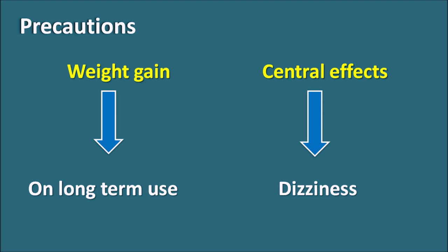These are the important precautions of pregabalin. In summary, pregabalin is a GABA derivative but is not acting on GABA receptors. It acts by modulating voltage-gated calcium channels on presynaptic neurons by binding to the alpha-2-delta site. By this modulatory action, it decreases the release of neurotransmitters like glutamate, norepinephrine, dopamine, and substance P, thereby decreasing nociception as well as neuronal excitation. That is about pregabalin.